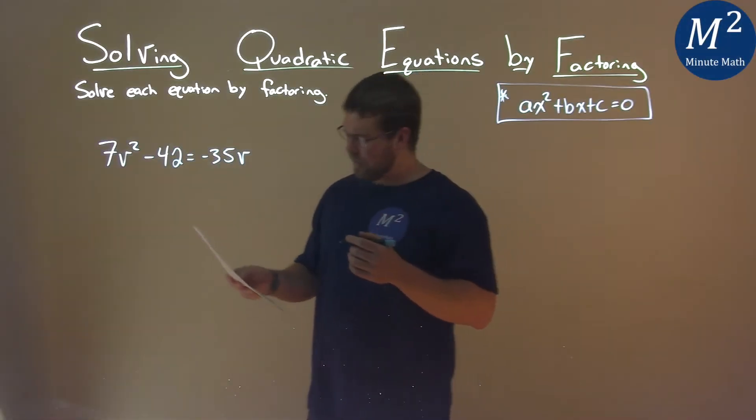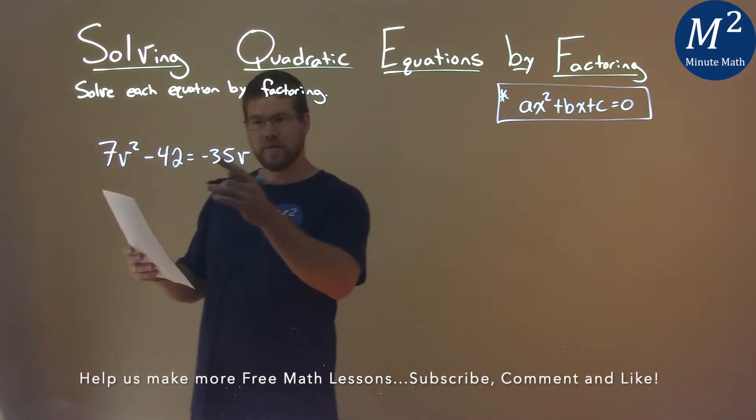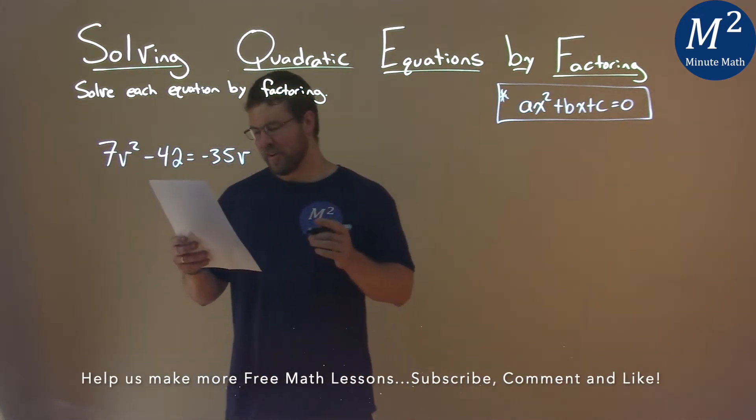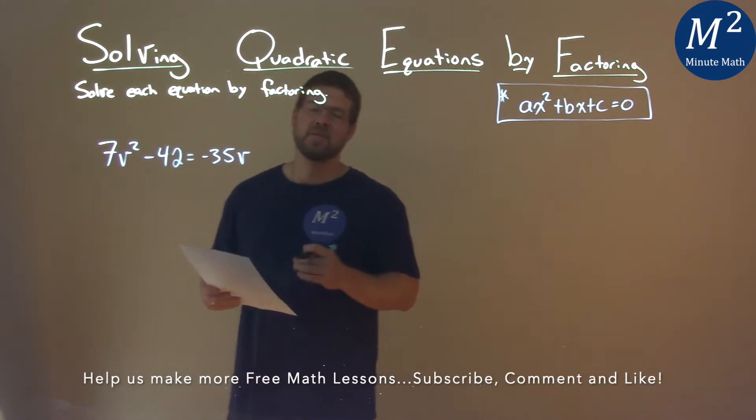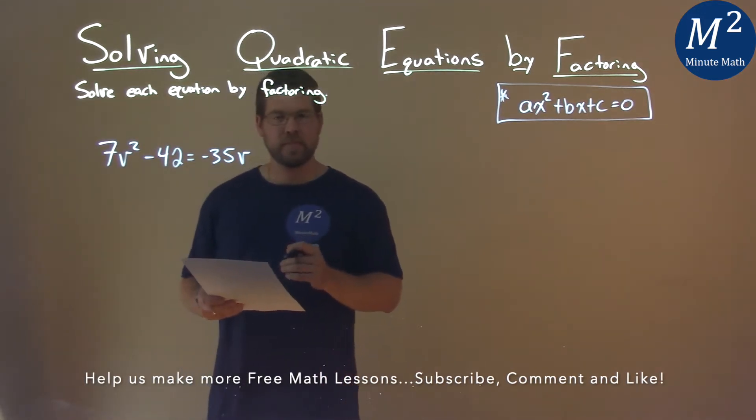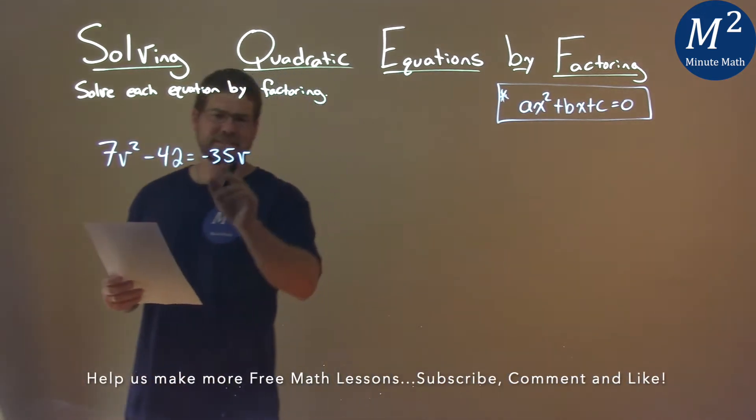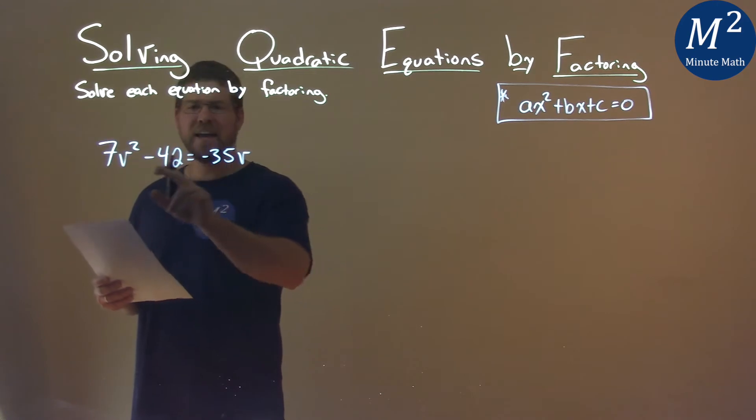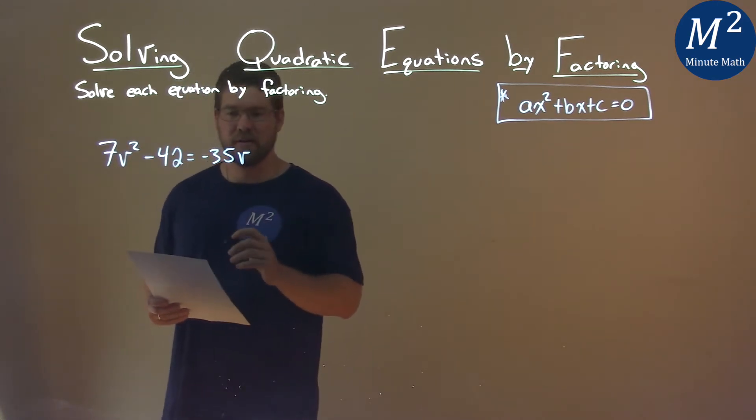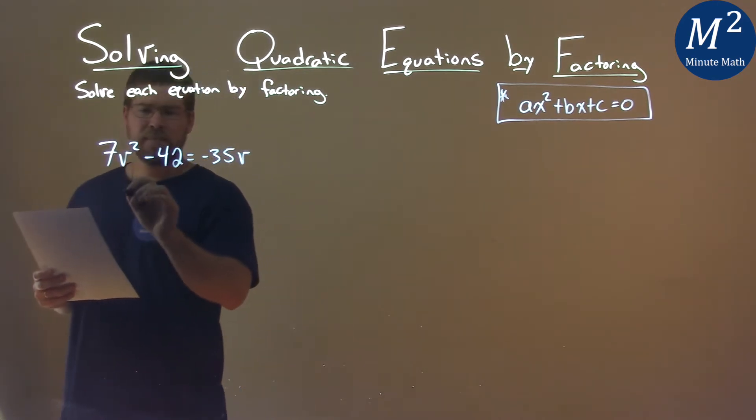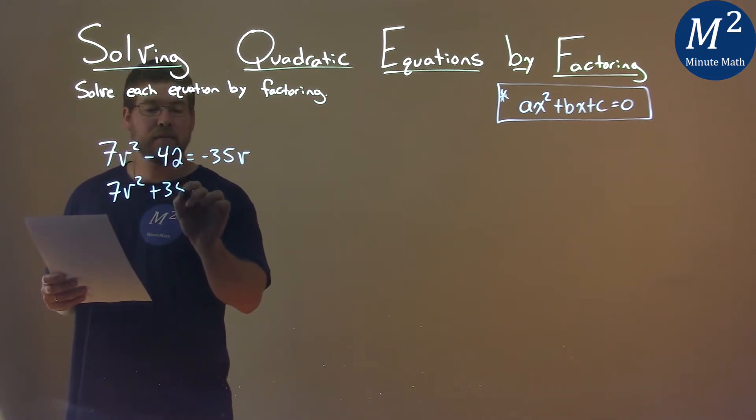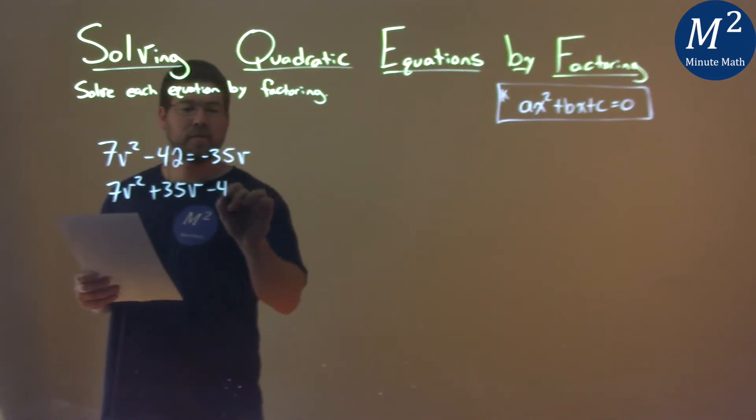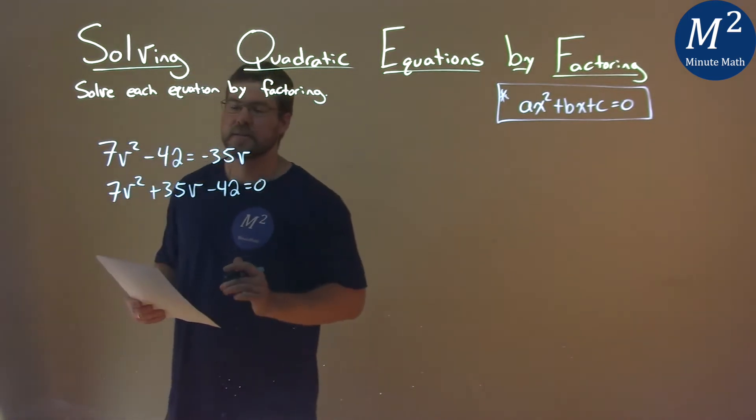We're given this problem right here: 7v² - 42 = -35v, and we need to solve this by factoring. First thing I need to do is add 35v to both sides. So I'm going to add 35v, and I have 7v² + 35v - 42 = 0.